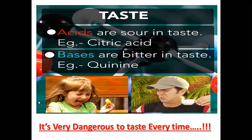One small girl is tasting the lemon. What is in the lemon? Citric acid. What is the taste of acid? It is sour. And the other thing is that bases are bitter in taste — a little bitter in taste. Like coffee, for example. Coffee is a little bitter in taste.